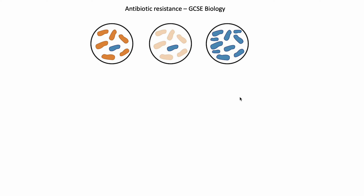Antibiotic resistance is basically when germs develop the ability to be resistant to antibiotics - drugs such as medicine that's supposed to kill your germs but they become ineffective. You're going to need stronger doses because these bacteria are going to mutate and evolve to become resistant to these drugs.